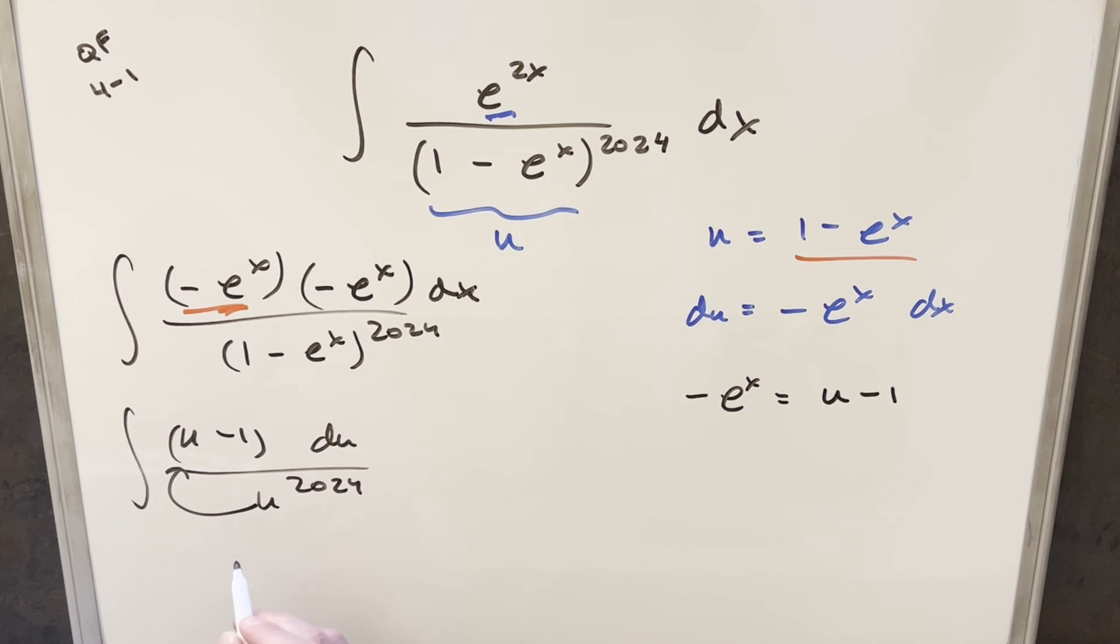But for this, what I'll do is, I'll just divide u to the 2024 into the numerator. So when I do that, what's going to happen is, we're going to end up with u to the minus 2023. And then for this, this will just become, I can write this as minus u to the minus 2024.